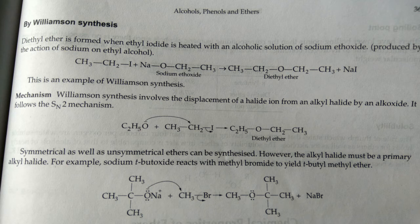In Williamson synthesis, you use ethyl iodide plus sodium ethoxide. NaI is removed and the remaining entities join together. This is an example where you are making a symmetrical ether. You need sodium alkoxide on one side and an alkyl halide on the other side.